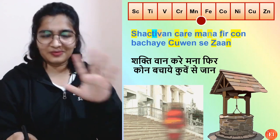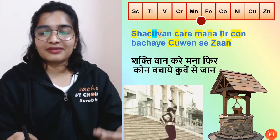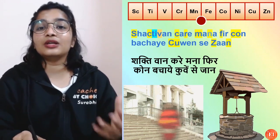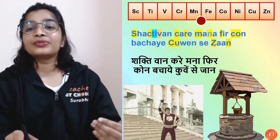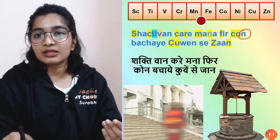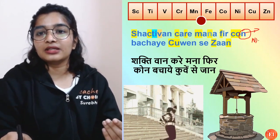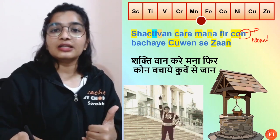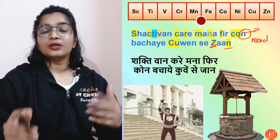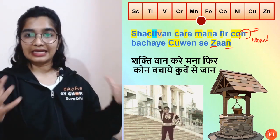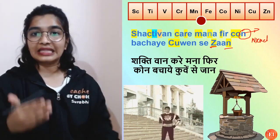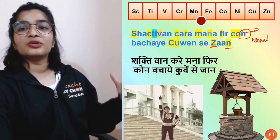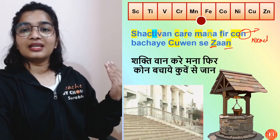F is for Iron (Fe), and Co is for Cobalt. 'Bachaye' — 'ku' gives us Copper (Cu), and in that word you also find Nickel. So in 'bachaye, kuve' you find both Cobalt and Nickel, and then Copper and Zinc. So if you remember this sentence — 'Shakti waan kare mana, fir koon bachaye, kuve se jao' — it should be easy for most of you.